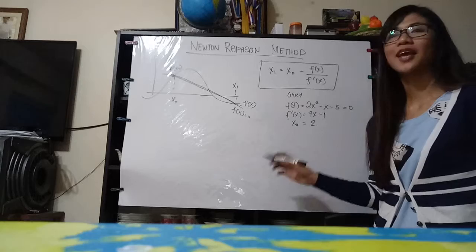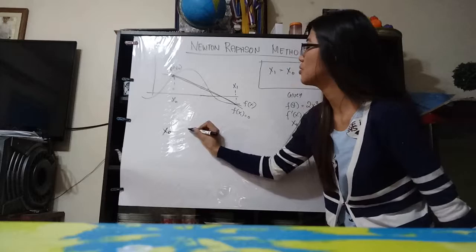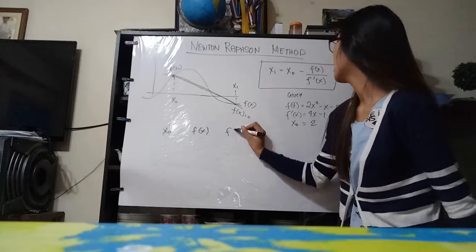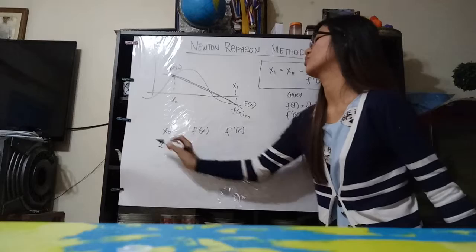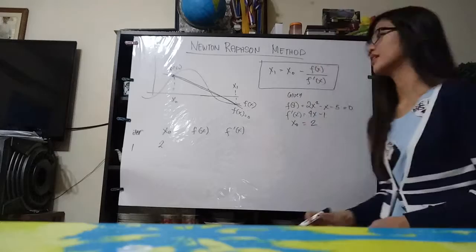When I solve formulas, for me personally I always have a table so that I don't get confused. So we create a table here with columns: iteration, x sub 0, and our value of f of x, and then our derivative f prime of x.